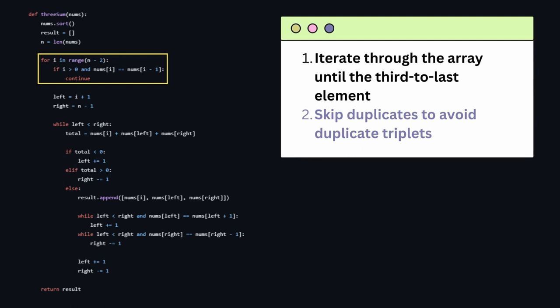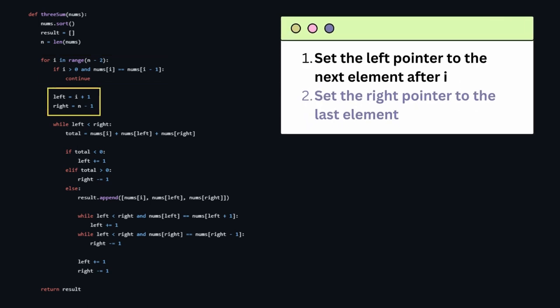We don't iterate through the entire array because it will violate the rules set in the problem. We guarantee that we have enough choices for j and k not to equal each other. Then we set the left pointer to the next element after i, and we set the right pointer to the last element.